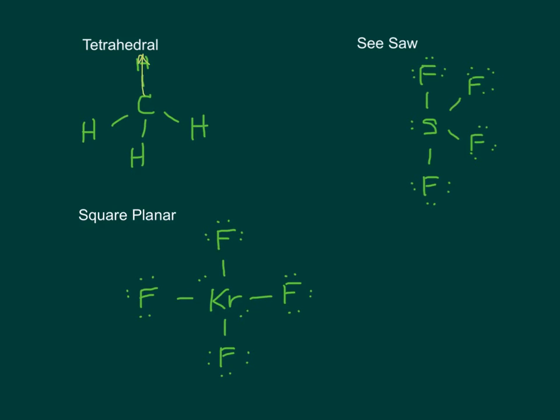Tetrahedral. Can you see that these are all exactly the same angle apart, about 109.5 degrees? These are all going to cancel, and this is going to be nonpolar. Same thing with square planar. Can you see how all of these things are canceling each other out? This is going to be nonpolar.